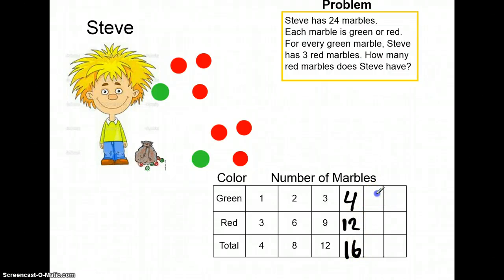So if we have five green marbles, how many red marbles are we going to have? That's right, fifteen. You may also notice that this number times three equals this number. Two times three equals six. Three times three equals nine. Four times three equals twelve. We're going to add these up to get our total of twenty marbles.